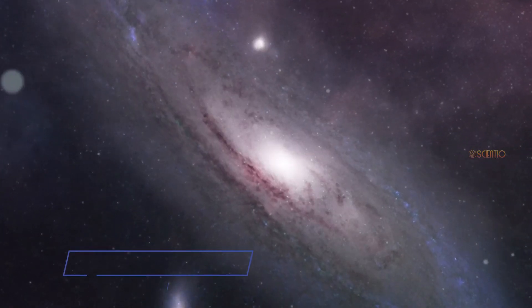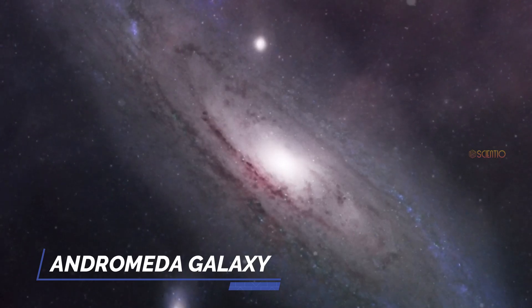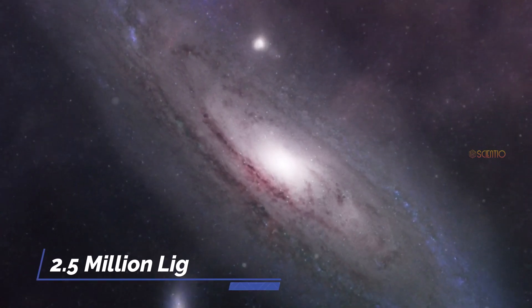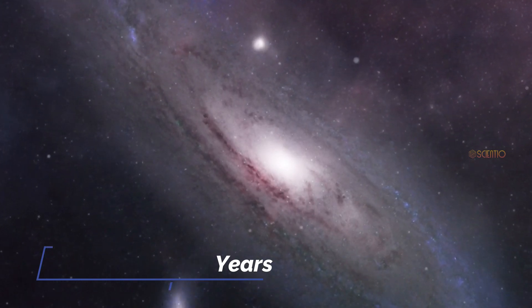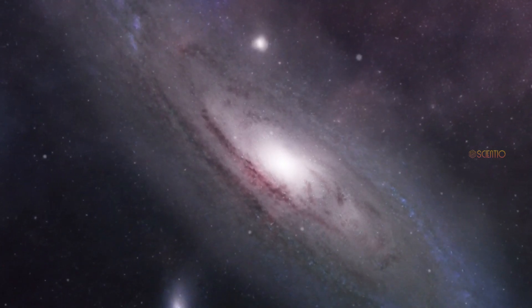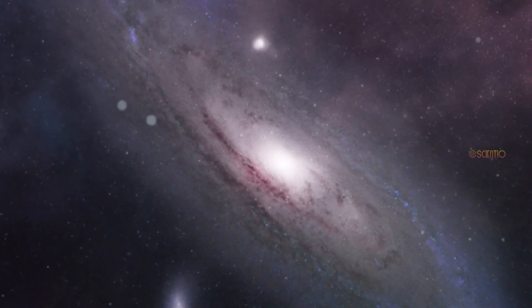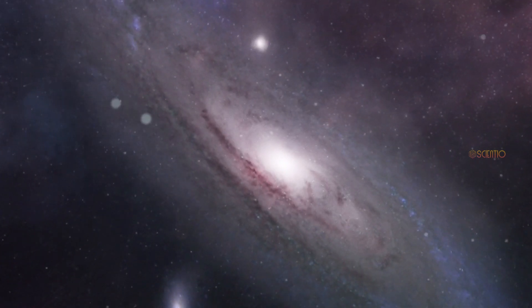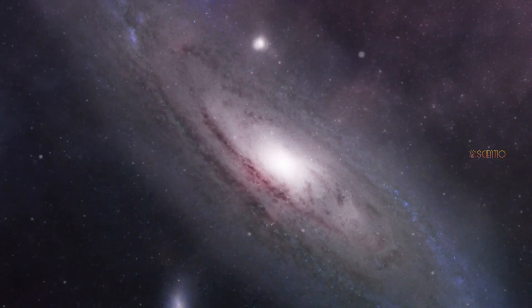The Andromeda Galaxy. This is a spiral galaxy located about 2.5 million light-years away from our solar system. It is the closest galaxy to us and is visible to the naked eye from Earth on a clear night. The Andromeda Galaxy is about twice the size of the Milky Way and is home to over a trillion stars.